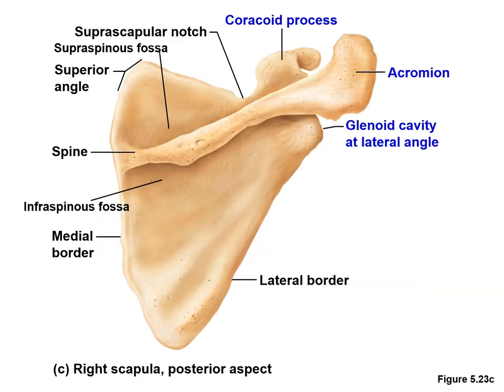The scapula is a triangular bone with superior, lateral, and medial borders. The corners of the triangle are known as the superior, lateral, and inferior angles. The scapula's broad flat surface is the body. There are two superior projections: the anterior coracoid process and the posterior acromion. The acromion forms the acromioclavicular joint with the clavicle. The posterior surface has a prominent ridge called the spine of the scapula, which is palpable as your shoulder blade. Superior and inferior to the spine are two depressions, the supraspinous and infraspinous fossa.